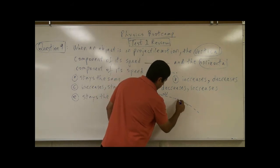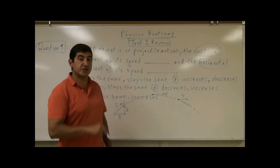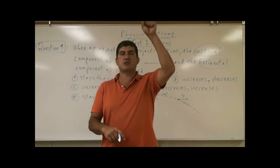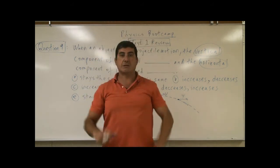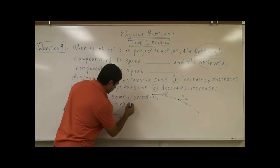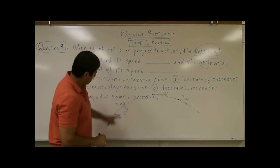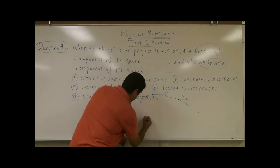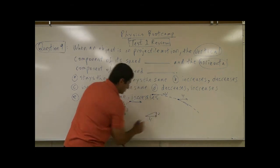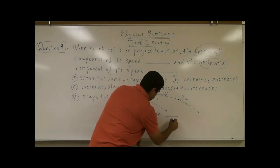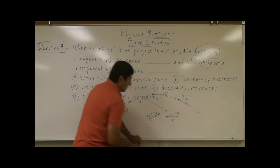What's going to happen to the vertical component? The vertical component speed will decrease all the way down to zero, and then as it's coming down the speed should increase. So by the time it gets to a certain point on the way down, I'll draw it — the vertical component is increasing while the horizontal stays at four.